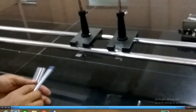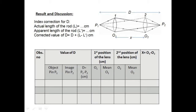So next we will discuss the readings of the experiment. Now let's come to the results and discussions. As explained, this is the measurement for index correction: L is the actual length of the rod — that is, the measurement between the tip of the object pin and the image pin. L' is the apparent length — the reading taken from the optical bench scale. The corrected value of D is given by D plus L minus L'.